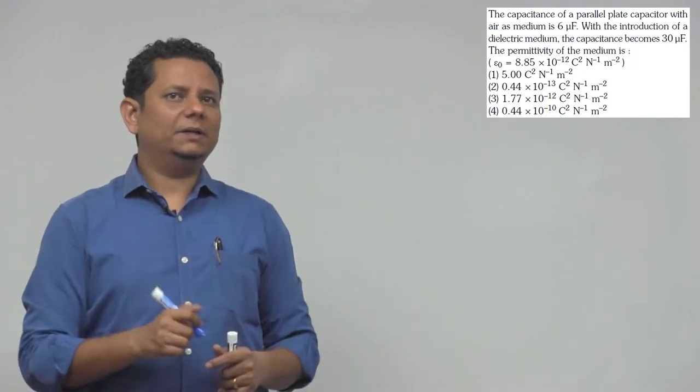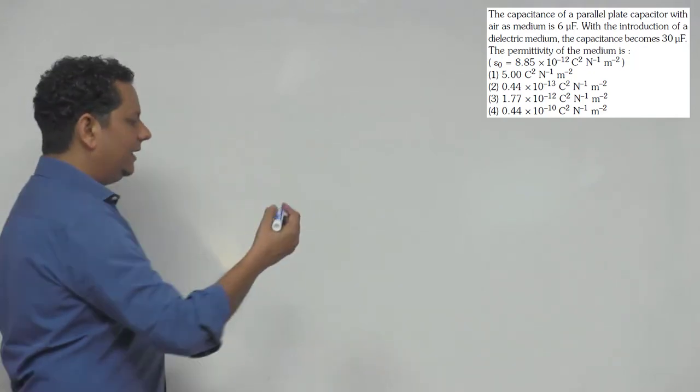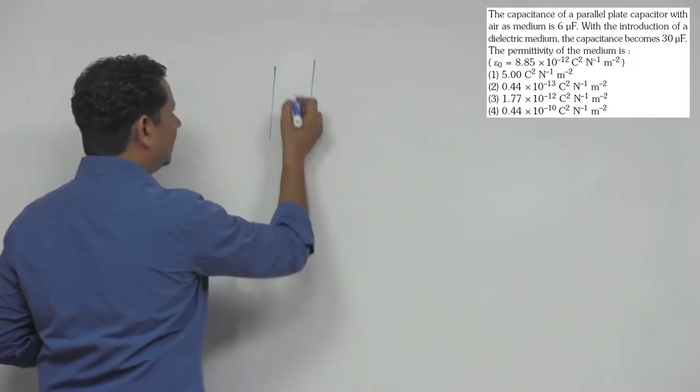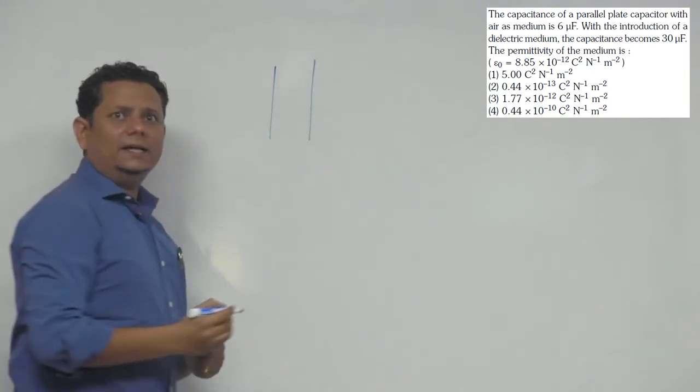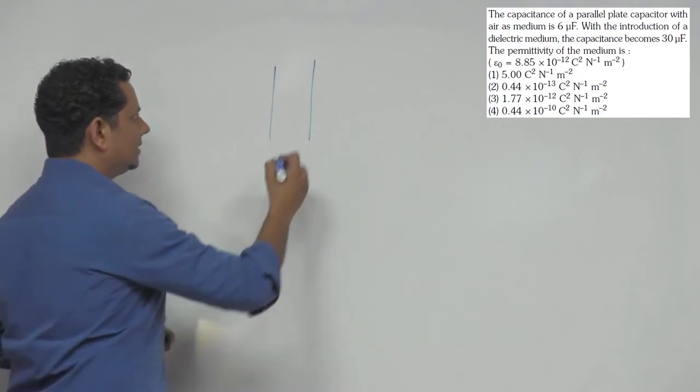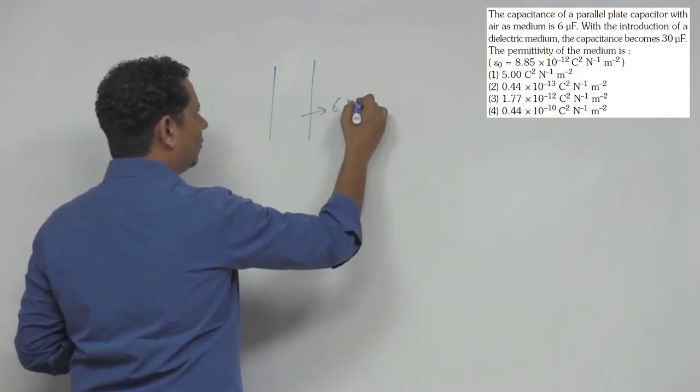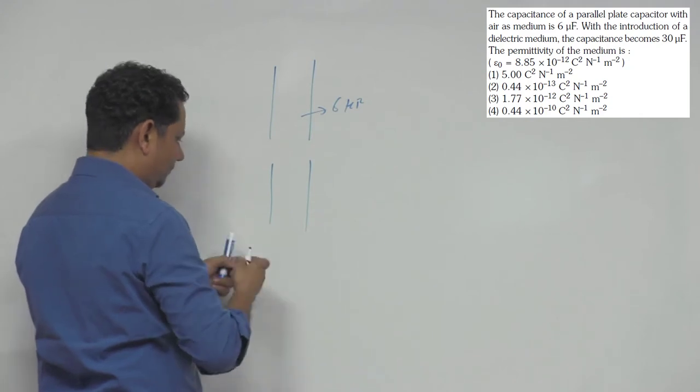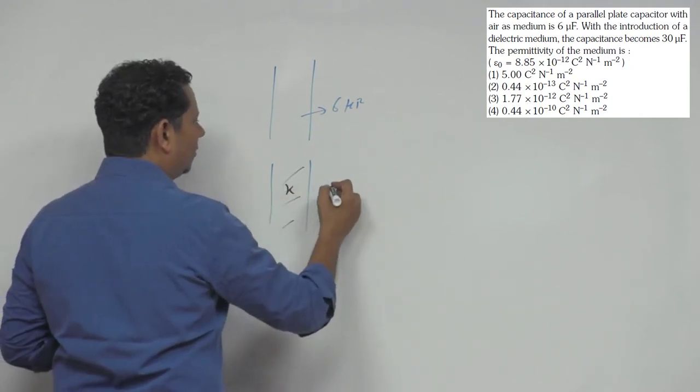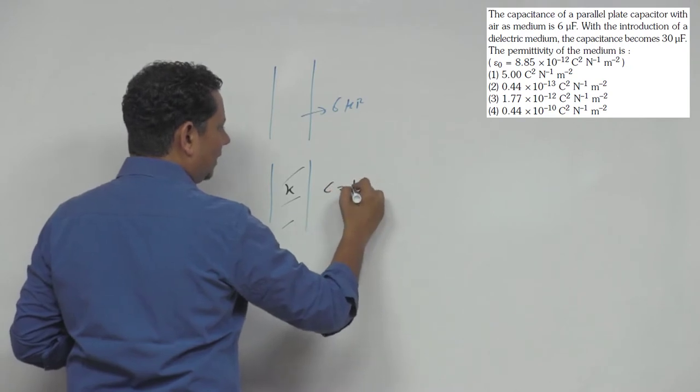So simple सी कहानी है कि यह आपका capacitor है. उसके अंदर पहले जब dielectric material नहीं था, तो उसका capacitance है 6, so this was 6 microfarad. अब इसके अंदर आपने dielectric material भर दिया है जिसका dielectric constant k है, तो उसका जो capacitance है उसको हम लिखते है k times c'.